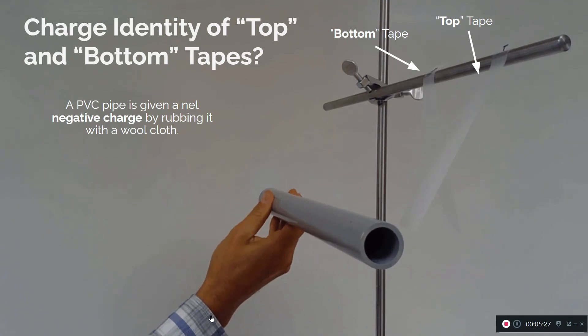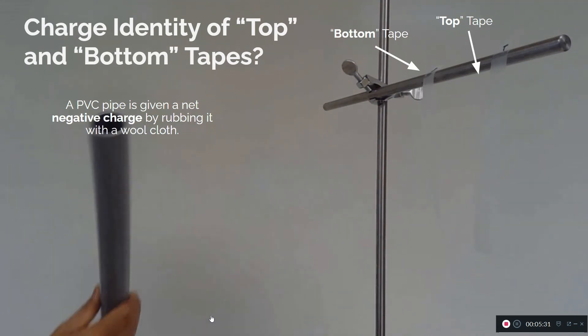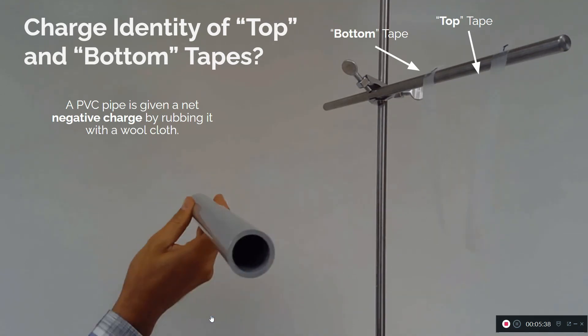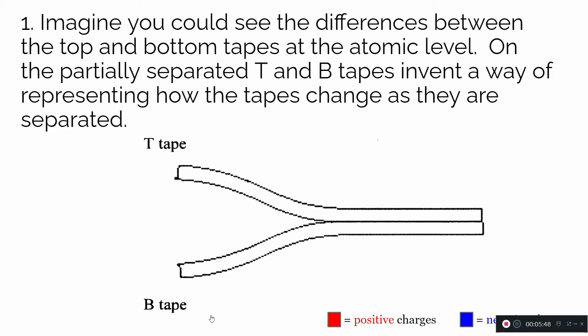So now we have a simple way of creating, with sticky tape, something of known positive charge and negative charge — which might come in handy in future investigations and demonstrations. Now let's see if we can use what we know to explain why two pieces of tape that start out neutral, when separated, result in one acting like a positively charged object and the other like a negatively charged object. Imagine you can see the difference between the top and bottom tape at the atomic or microscopic level.